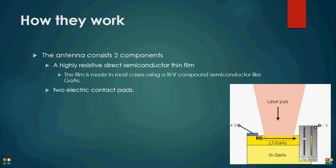The PCA consists of a highly-resistive semiconductor film with two electric contact pads. The image here shows exactly what that means. Represented by the two blue rectangles are the contact pads, while the larger yellow area is the highly-resistive direct semiconductor thin film. The red area represents the signal being either emitted or received by the antenna.